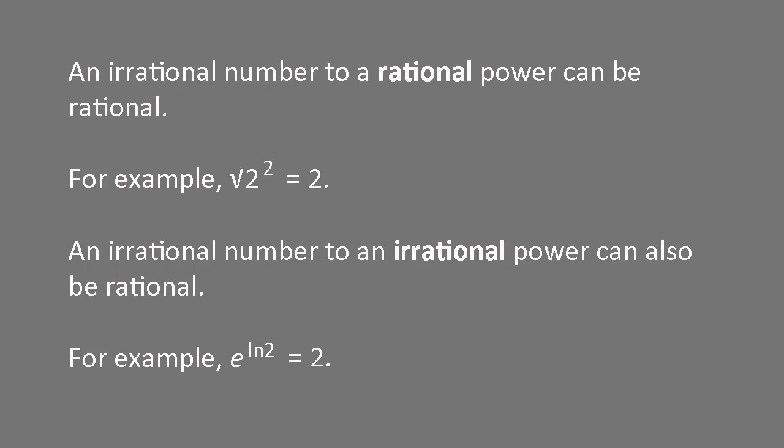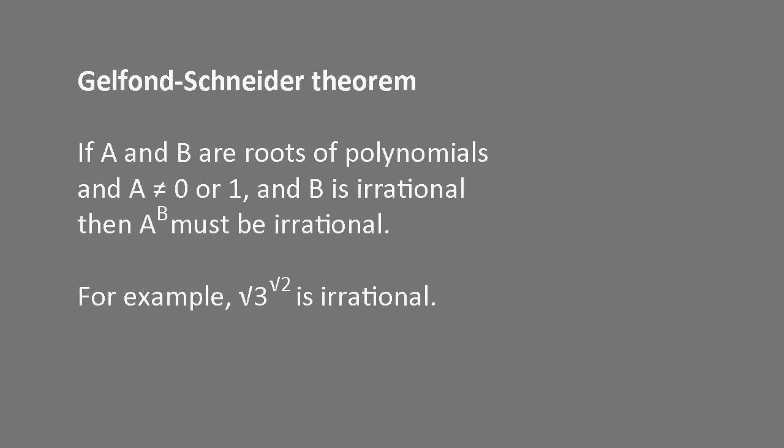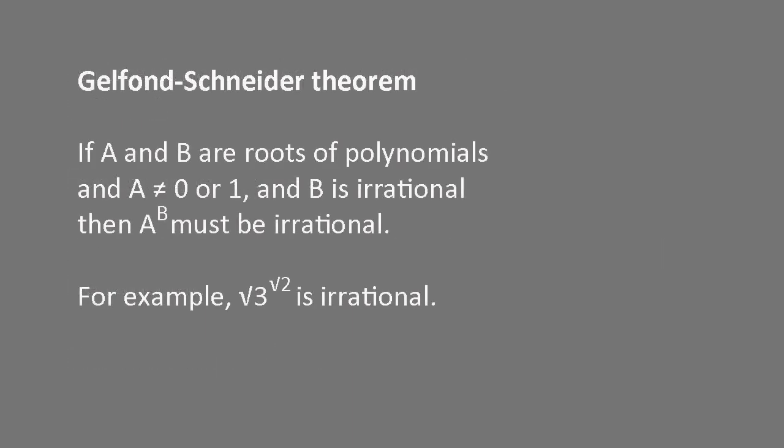What kind of number is root two to the root two? The answer is irrational. This follows from the so-called Gelfond-Schneider theorem, which says that if A and B are roots of polynomials, and A isn't zero or one, and B is irrational, then A to the B must be irrational, and in fact it will also be transcendental.